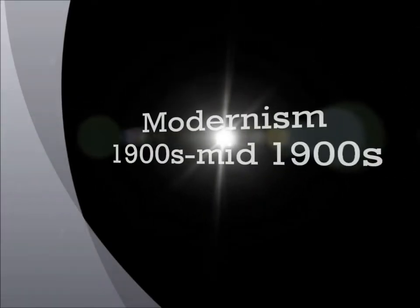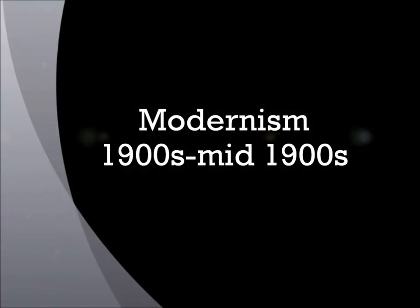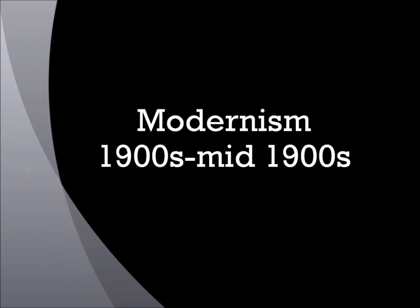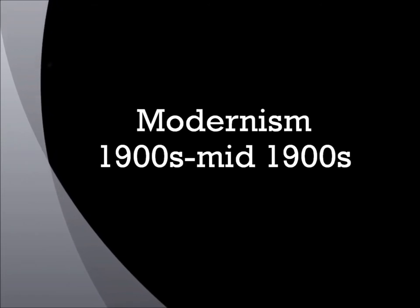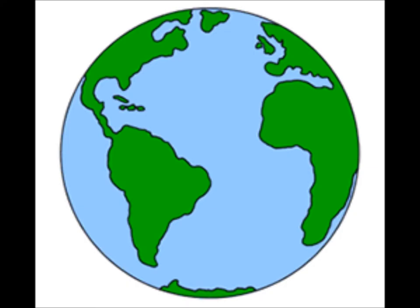Modernism is a cultural time period that took place during the beginning to mid-1900s. The goal of the modernistic period was to break from traditional and classical ways of the time period before. Modernism is a movement that impacted not only literature, but also music and artwork.